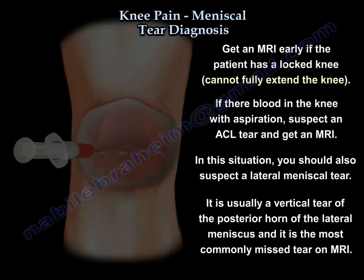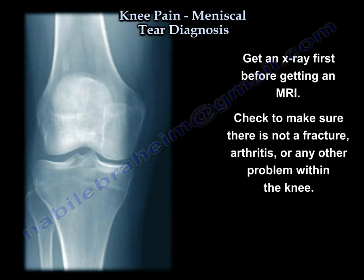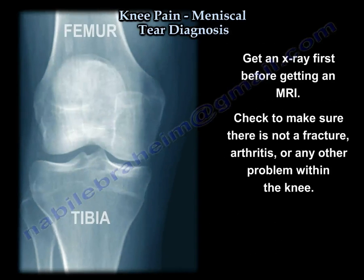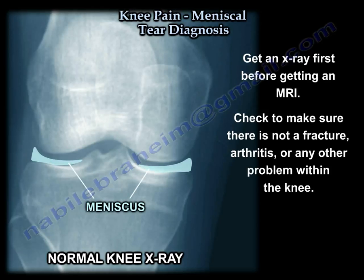In this situation, you will suspect a lateral meniscus tear. It is usually a vertical tear of the posterior horn of the lateral meniscus, and it is the most commonly missed tear on an MRI. Get an x-ray first before the MRI to check if there is a fracture, arthritis, or any other problems in the knee.